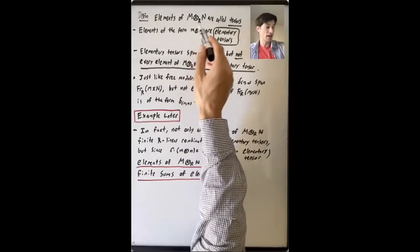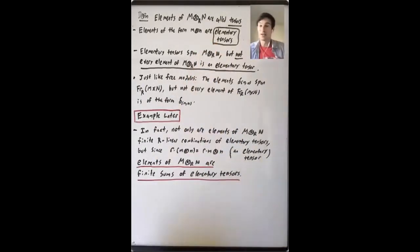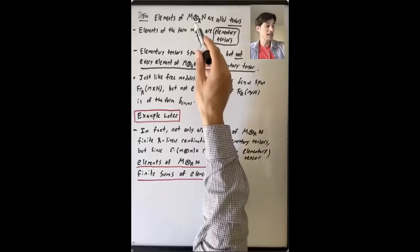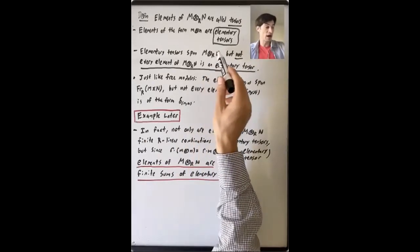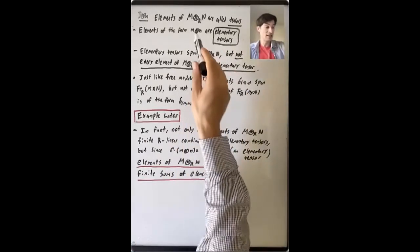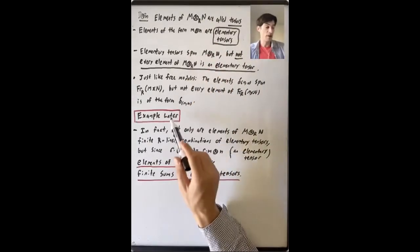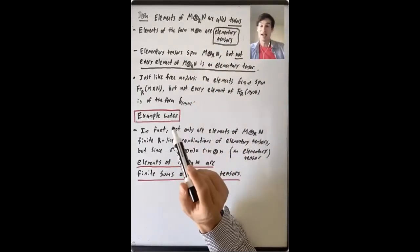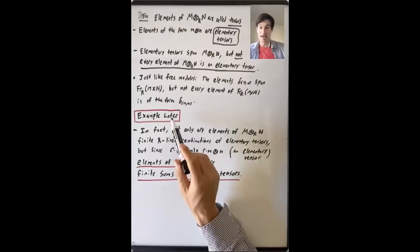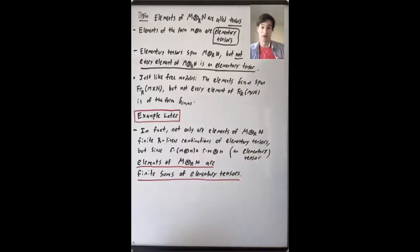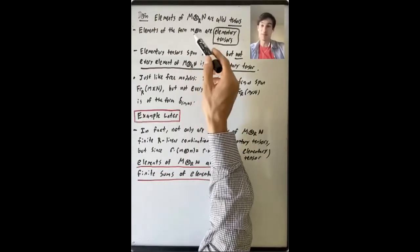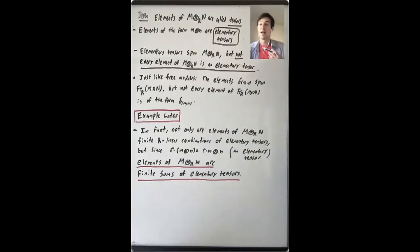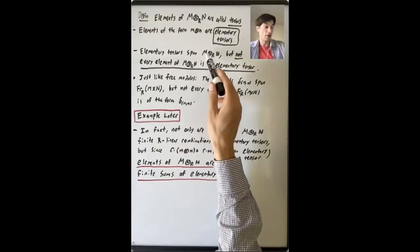These elementary tensors — sometimes called simple tensors — span the tensor product as an R-module, but there are examples of elements in a tensor product that are provably not elementary tensors. We will see an example of this at the end of the next lecture. We know we have this subset of elementary tensors, so how do we know whether or not there are other elements?